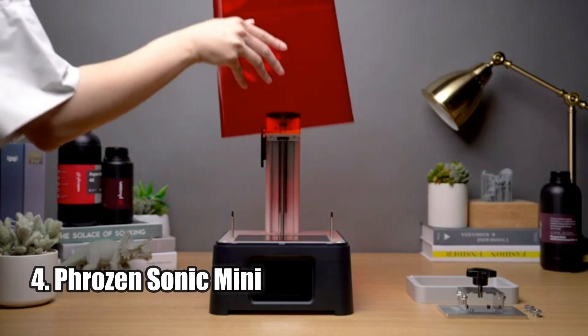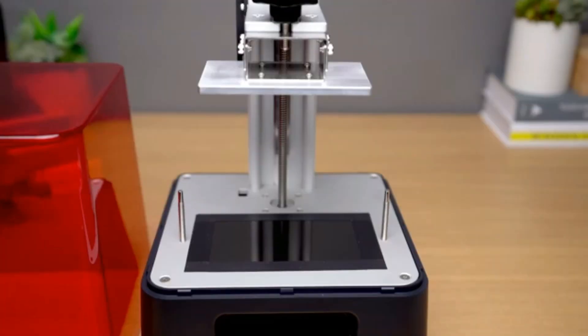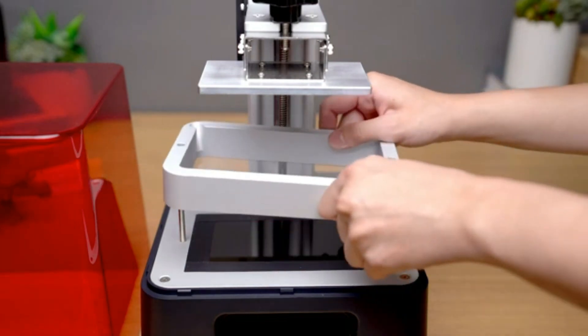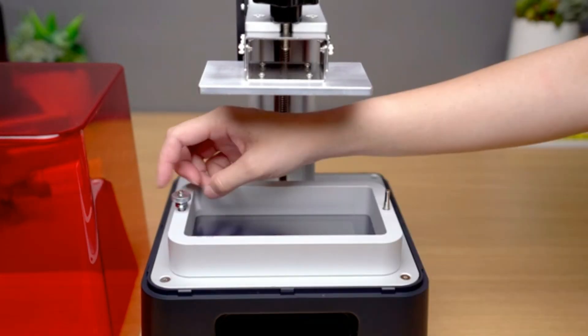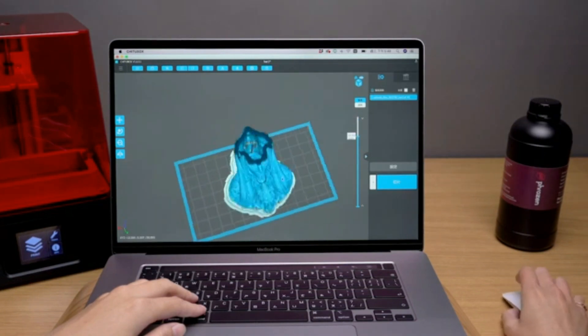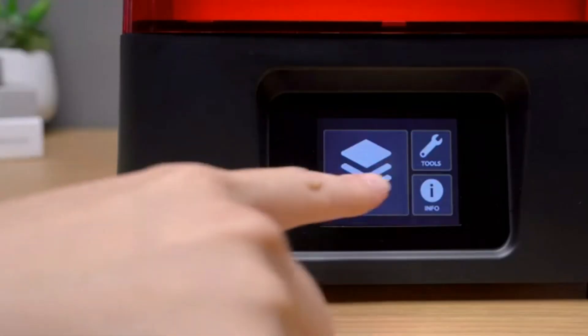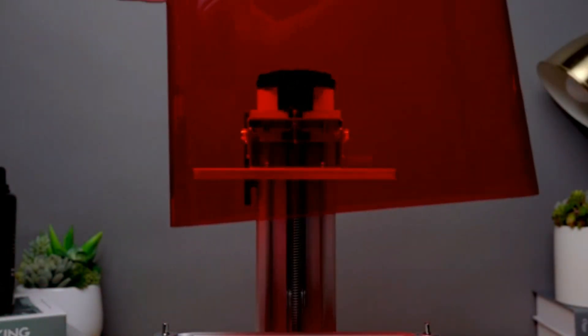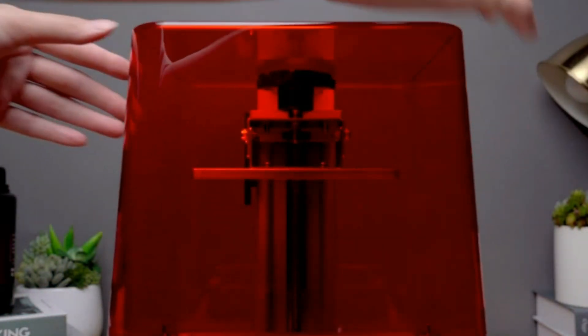Frozen Sonic Mini. The Frozen Sonic Mini LCD resin 3D printer series is a revolutionary new option for those who need to produce jewelry and miniatures quickly and accurately. This printer utilizes Matrix LED UV light tech for remarkable optical uniformity, and it also has a mono-LCD screen that can last for up to 2,000 hours.